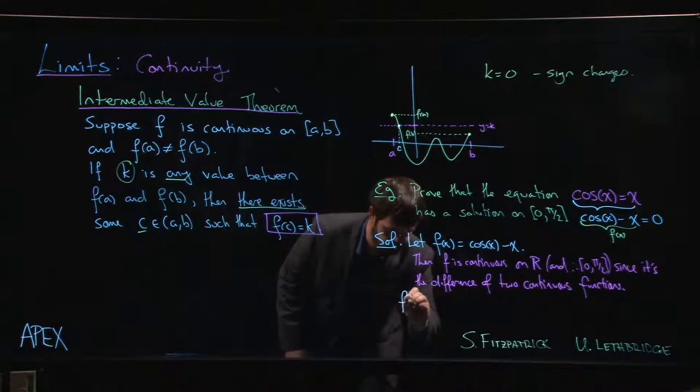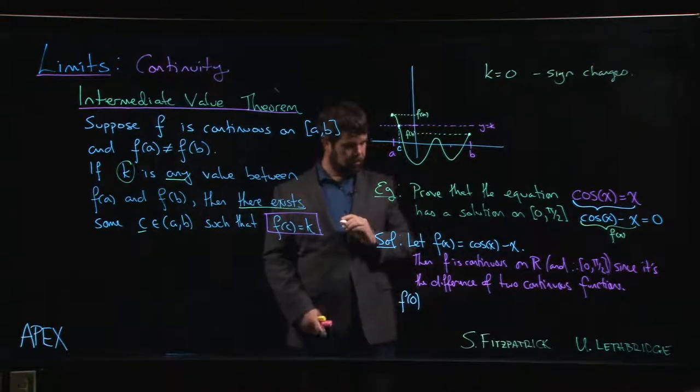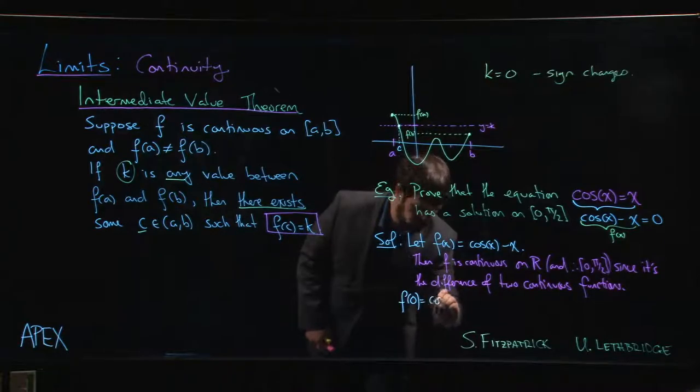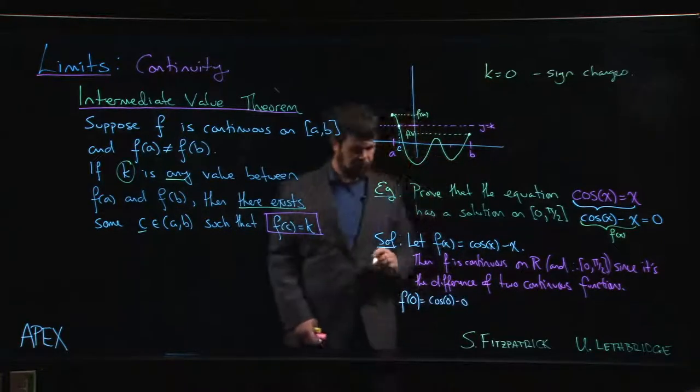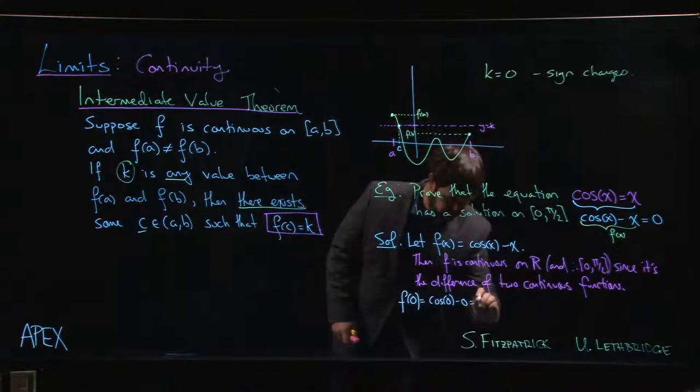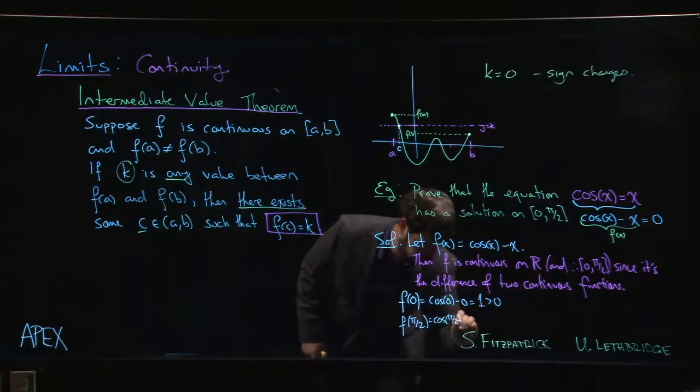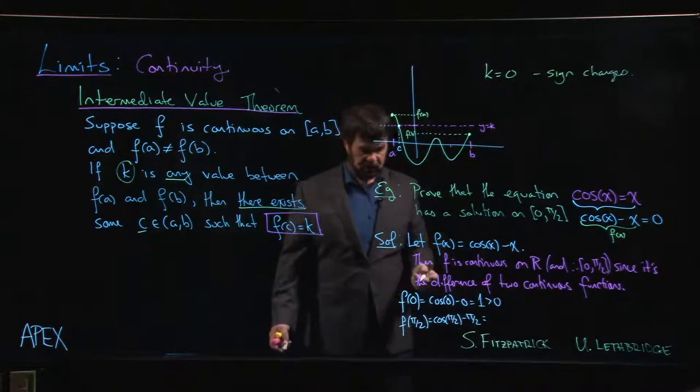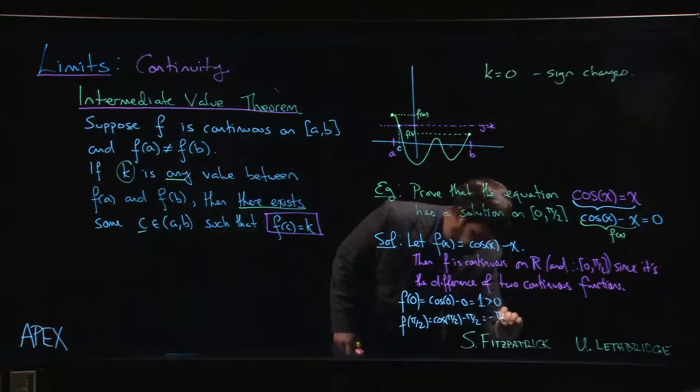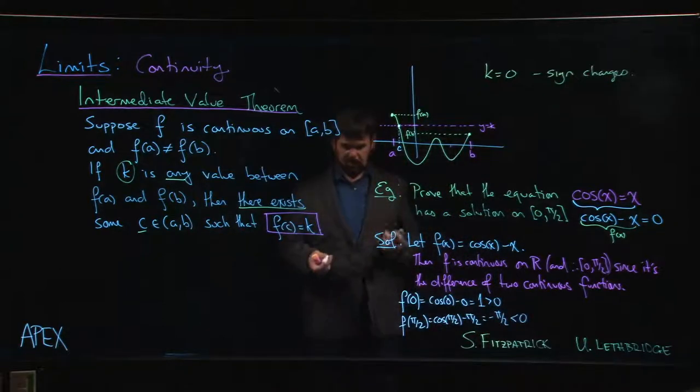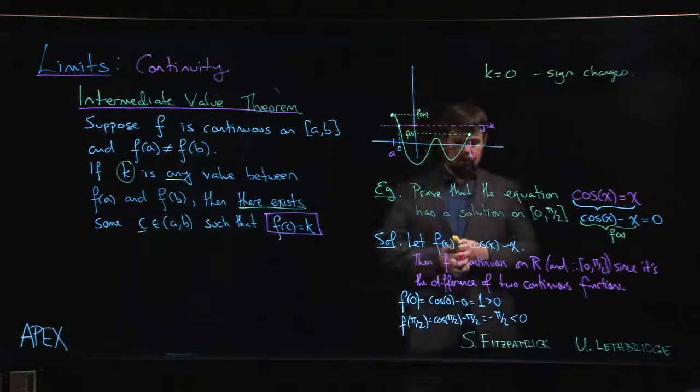So we have f(0) is cos(0) minus 0, but cos(0) is 1, so f(0) is 1, which is positive. And f(π/2) is cos(π/2) minus π/2. Cosine of π/2 is 0, so this is negative π/2, which is less than 0. So positive at one endpoint, negative at the other. We put these two together there.